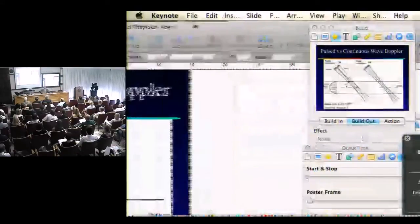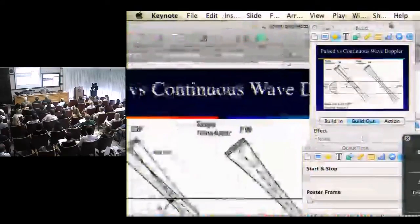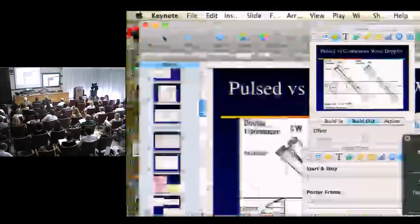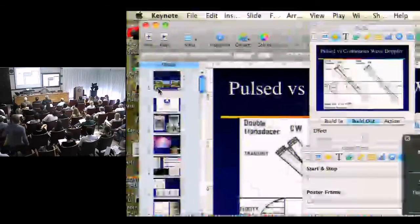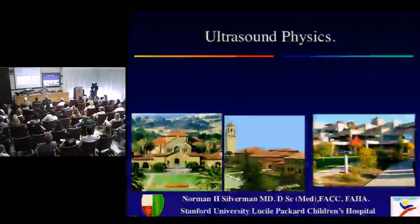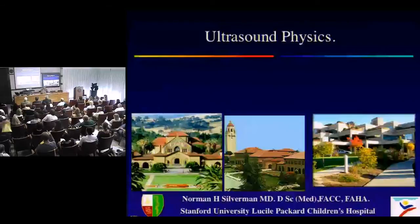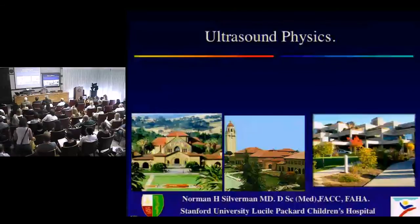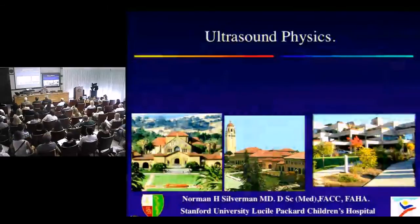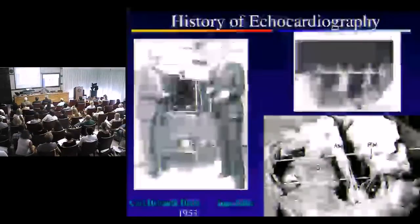We're going to begin the first session on instrumentation and what is important in terms of the instrumentation. We'll talk about ultrasound physics, then move into two-dimensional echo, then Doppler and color flow, then 3D, strain and strain rate and failure, and finally magnetic resonance imaging.